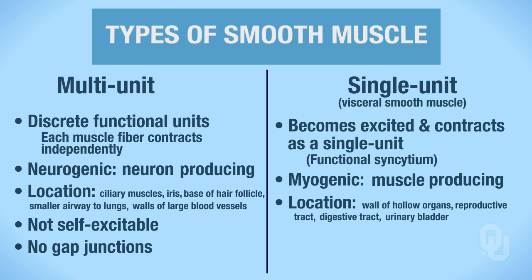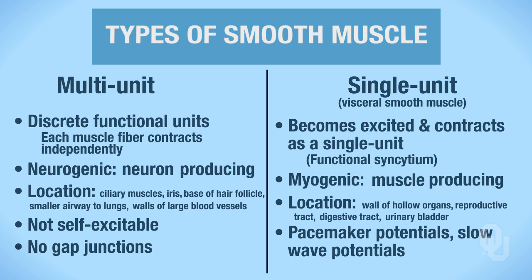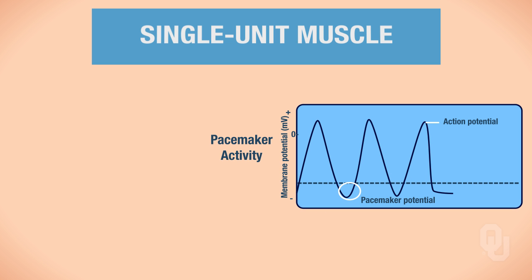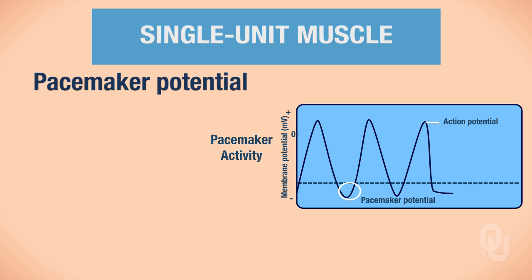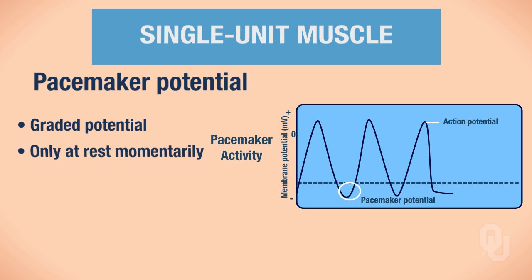In single-unit smooth muscle, there are also pacemaker potentials and slow wave potentials — we'll briefly introduce them here and discuss them in detail later. A pacemaker potential is a type of graded potential. Looking at the graph, does this cell stay at rest for very long? No — it is only at rest momentarily. As soon as the membrane potential comes back to rest, another action potential fires. This entire pattern is called pacemaker activity.